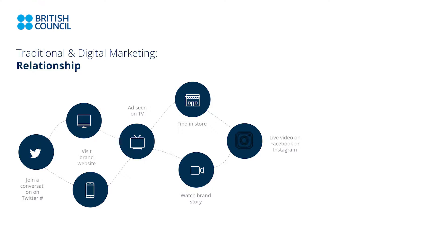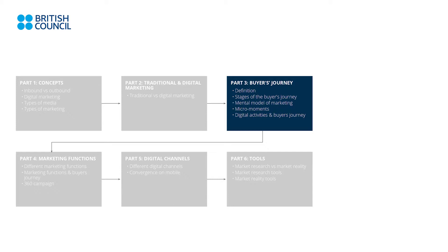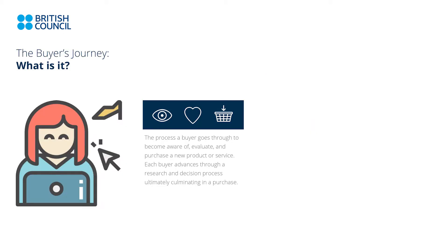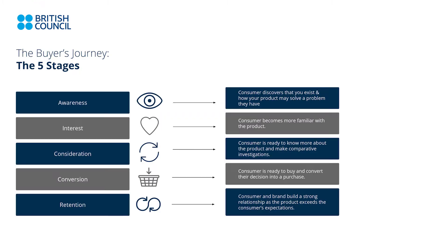Now let's talk about the buyer's journey. The buyer's journey is a process a buyer goes through to become aware of, evaluate, and purchase new products or services. Each buyer advances through a stage of research and decision process, ultimately culminating in a purchase. Before you buy something, there was a process you went through, and that process has five stages. The first one is the awareness stage — when consumers discover how your product may solve a problem they have. For instance, when you see an advert and realize you actually have that problem, you just became aware that the product can solve your need.